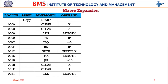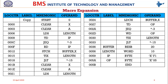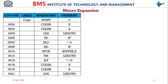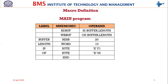At address 001B begins the expansion of the second macro invocation - WRITEBUFF. The third statement of the main program was the WRITEBUFF invocation, and you can see it expanded with location counter reaching 0033 at the last statement of WRITEBUFF. The main program had two macro invocations - READBUFF and WRITEBUFF - which both got expanded, and what remains are the declarative statements.